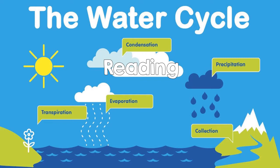The warm sun causes liquid water to evaporate, meaning to change from a liquid into a gas or vapor, and it rises into the sky. The water vapors that are formed cool during evaporation.